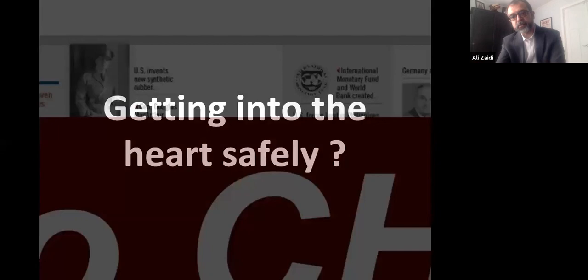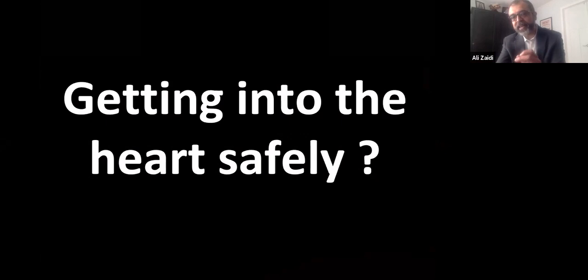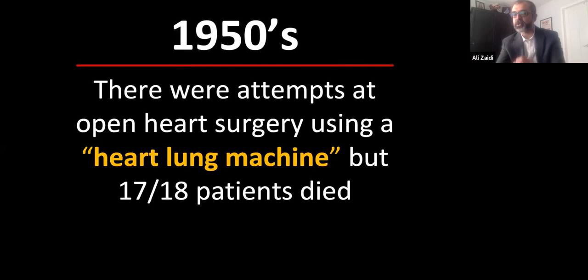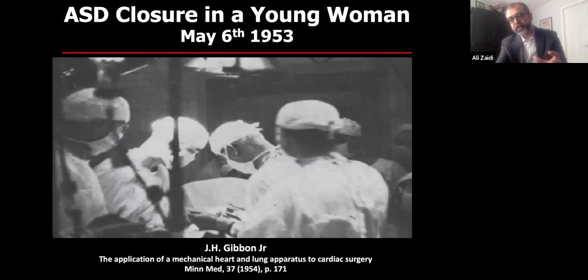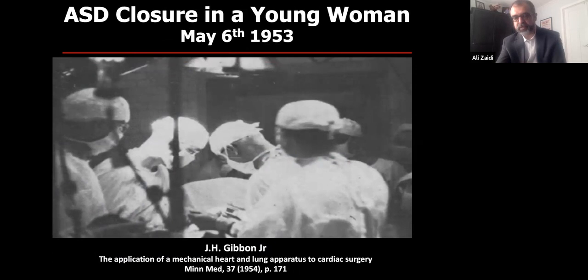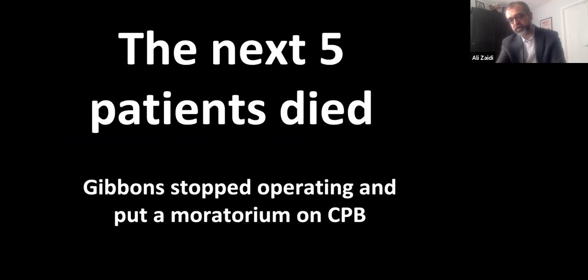In the 1940s and 1950s the question was: can you actually open the heart? That's the concept of the heart-lung machine, or cardiopulmonary bypass apparatus. Developed in Boston by John Gibbon, his first operation inside the heart was an ASD — an atrial septal defect — in a young woman, successfully performed on heart-lung bypass. But his next five patients died on the cardiopulmonary machine. He said, 'I'm not doing this anymore,' put a moratorium on it, and shut the whole operation down.